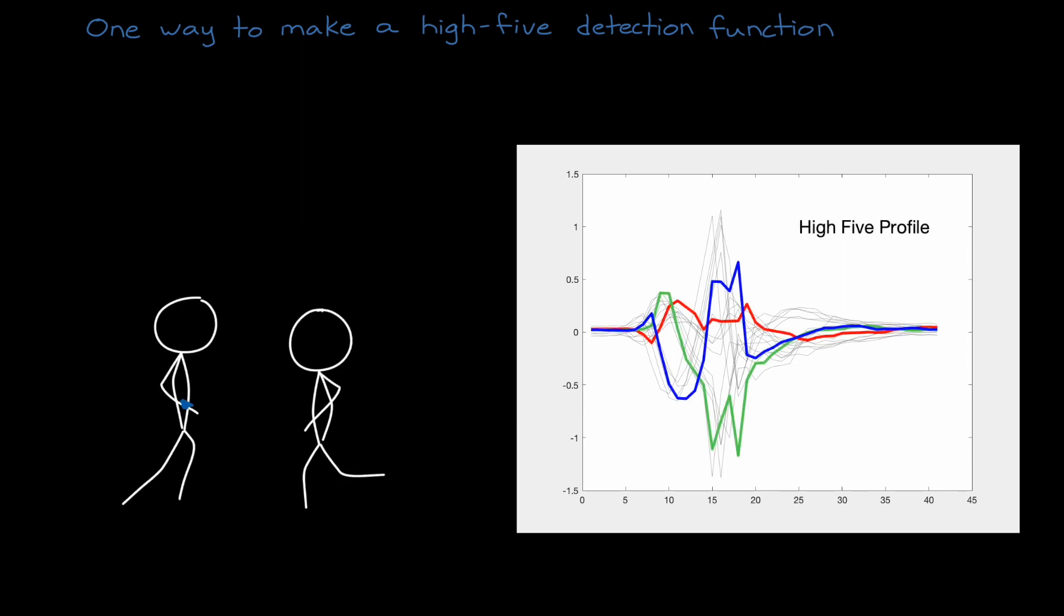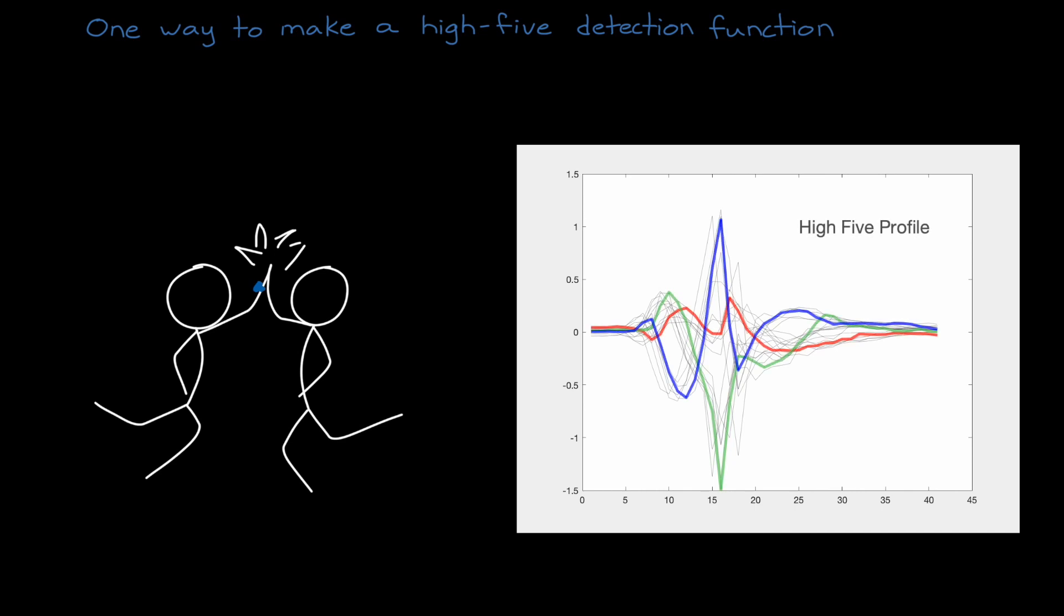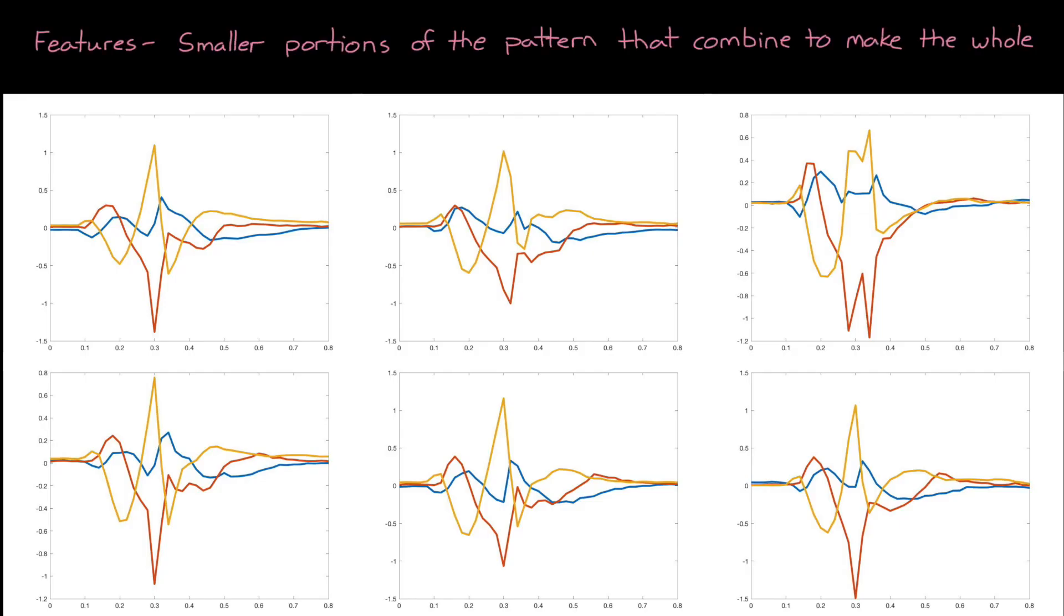But that wouldn't cover the cases for the high-fives that fall outside of these ranges and that we didn't collect data for. So instead of having a database of millions of profiles that we need to check, one for every possible type of high-five, we might be a little smarter about it and realize that instead of looking at the pattern as a whole, which can have wild variations, maybe we can find a set of features that they all have in common and just check for those.